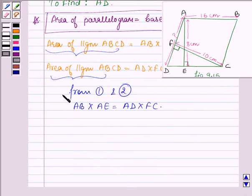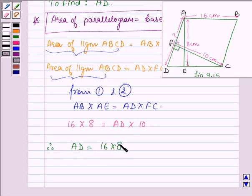On substituting the values AB is equal to 16 into AE is 8, we have to find AD and FC is 10 cm. Therefore, AD is equal to 16 into 8 upon 10 which is equal to 128 upon 10 which is equal to 12.8.